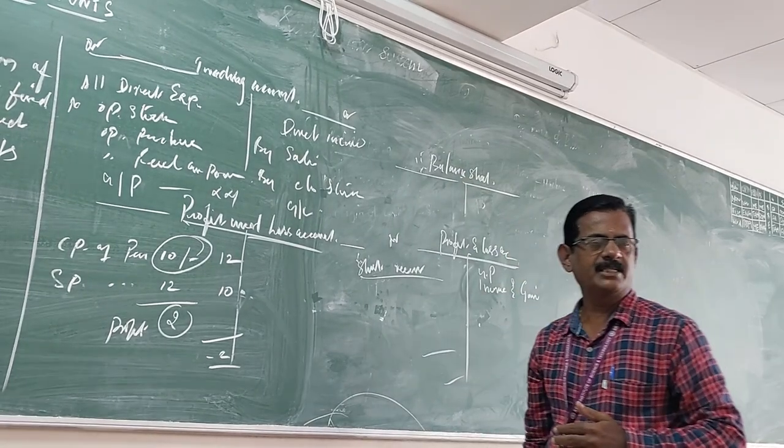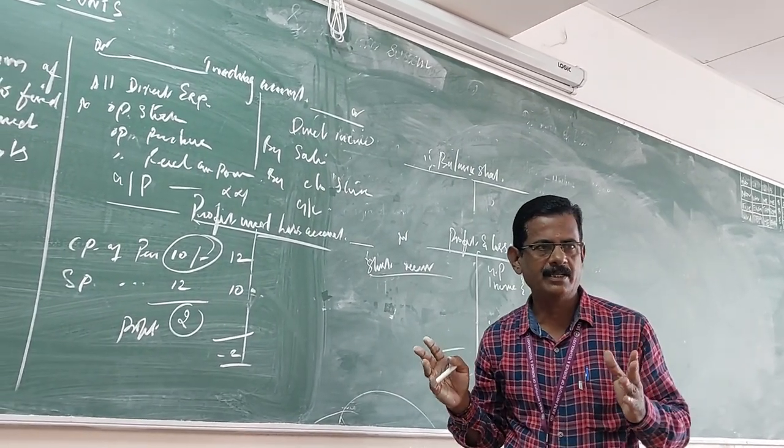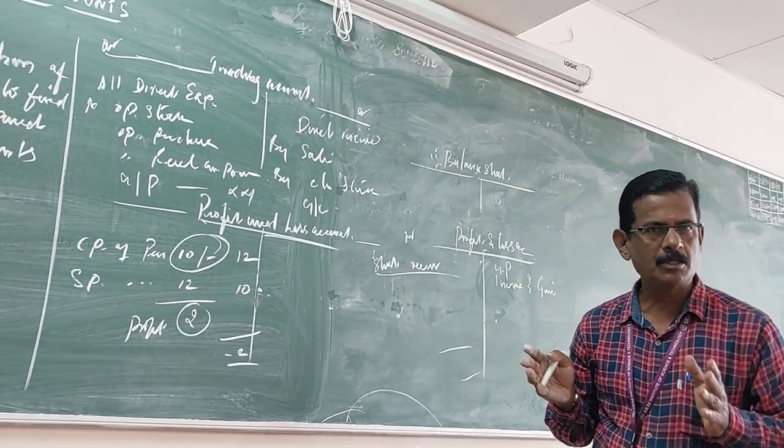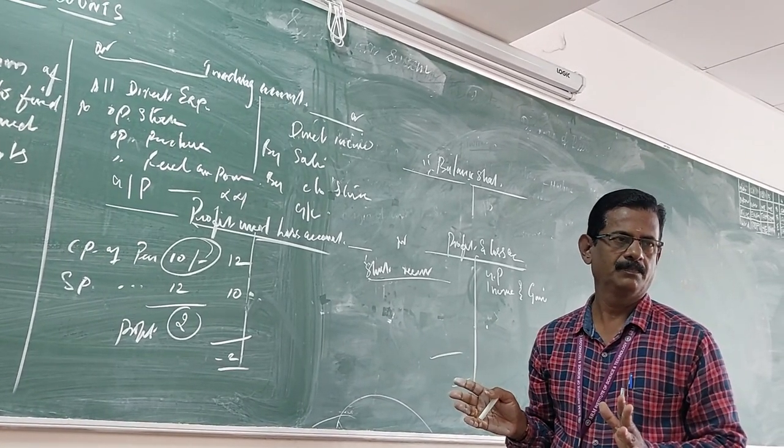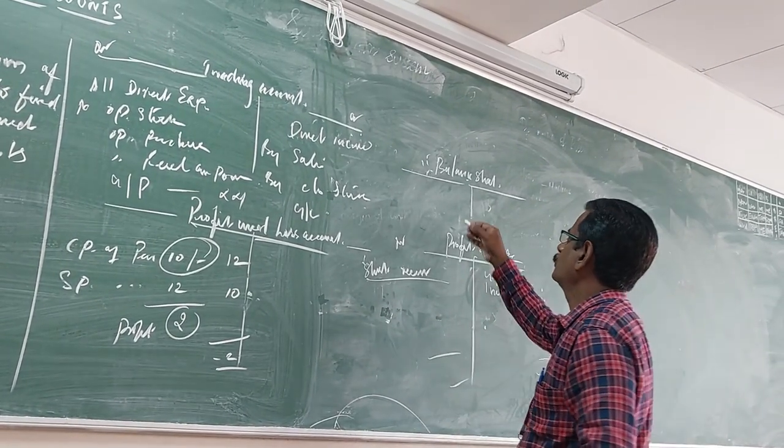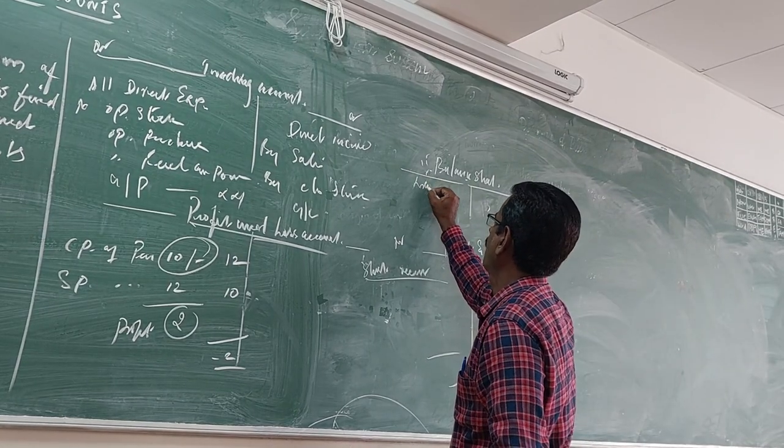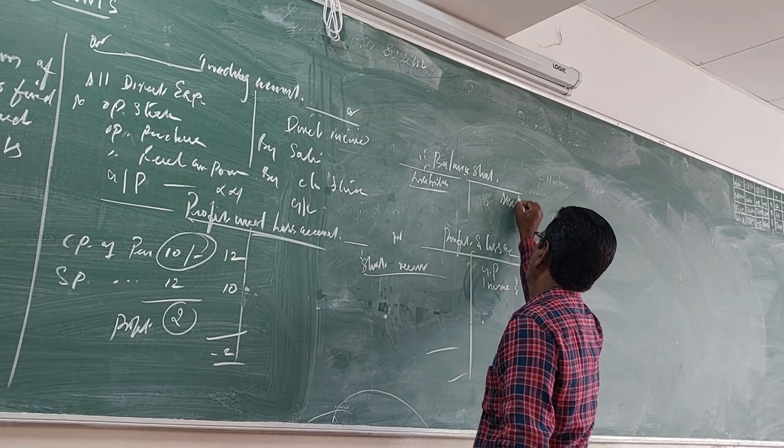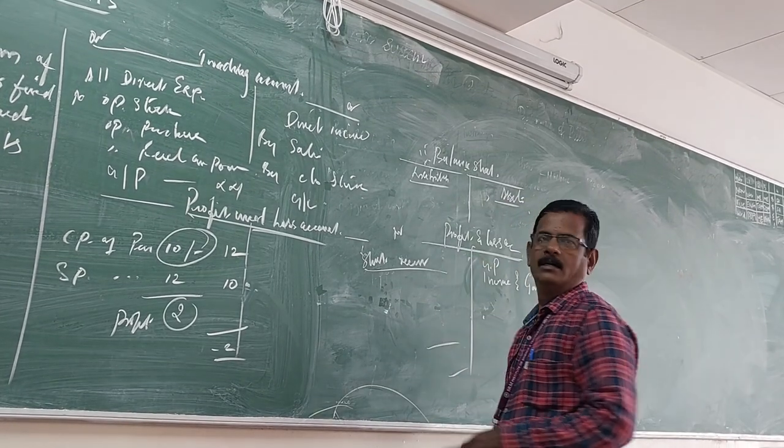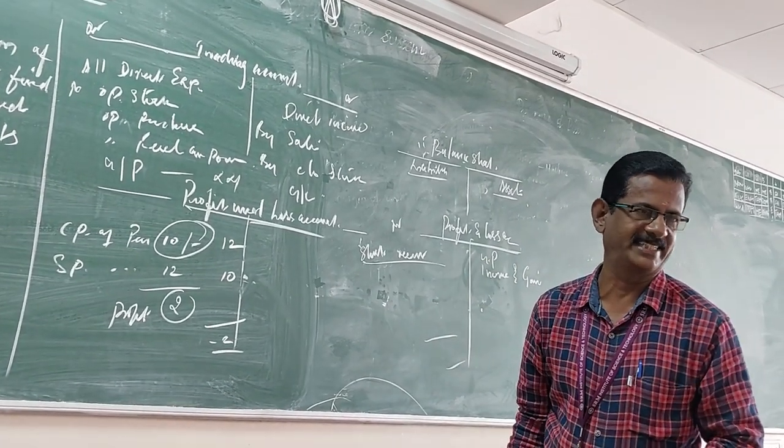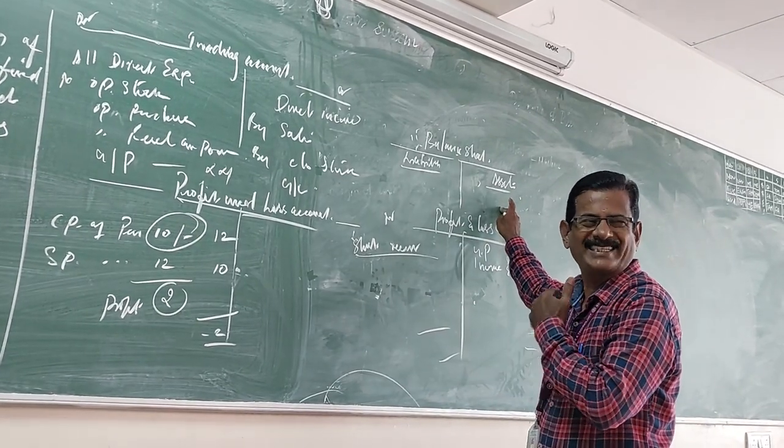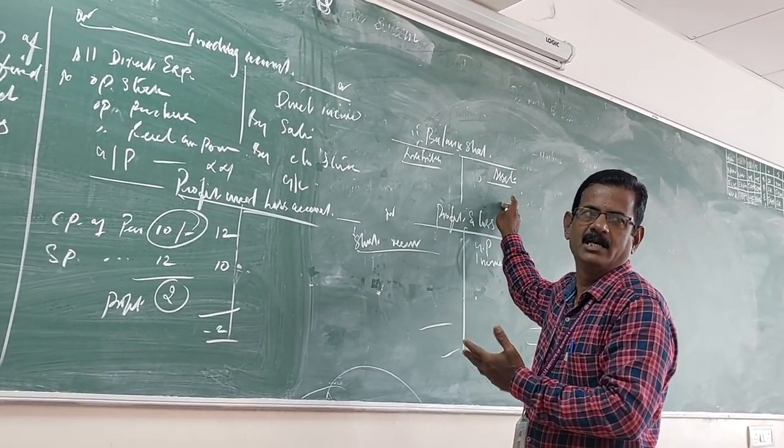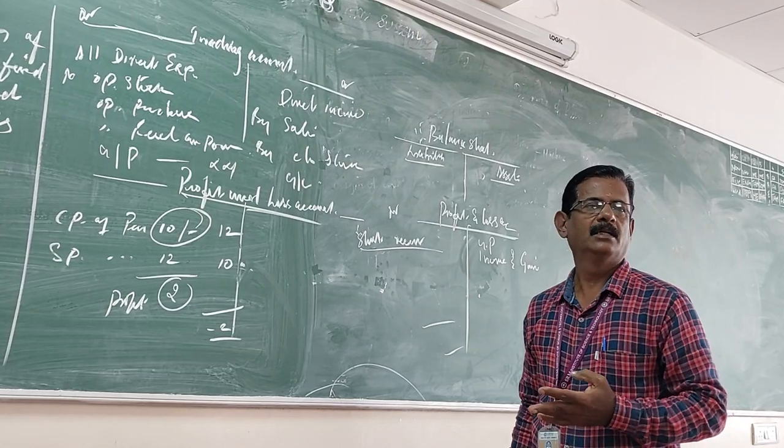Next, balance sheet. What is balance sheet? Balance sheet is a statement that shows the position of the concern. It has two sides - the asset side and the liability side.